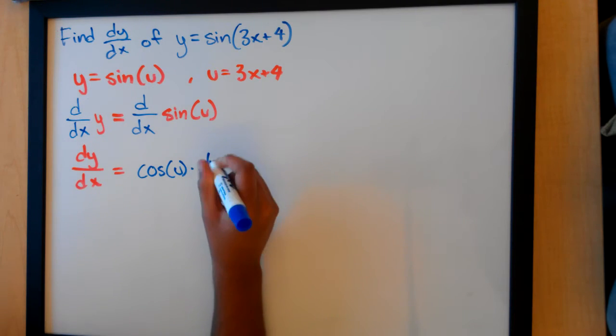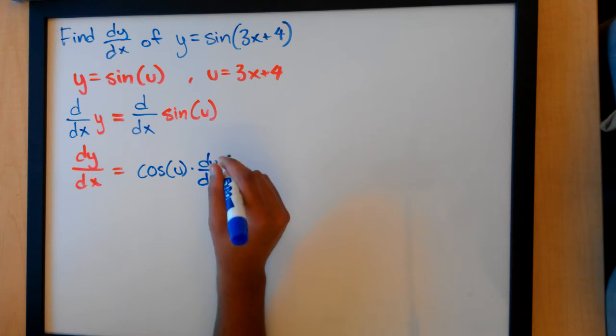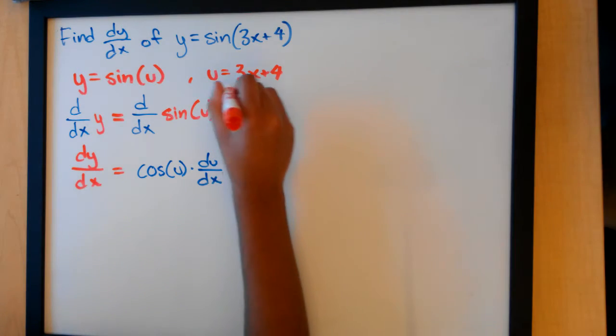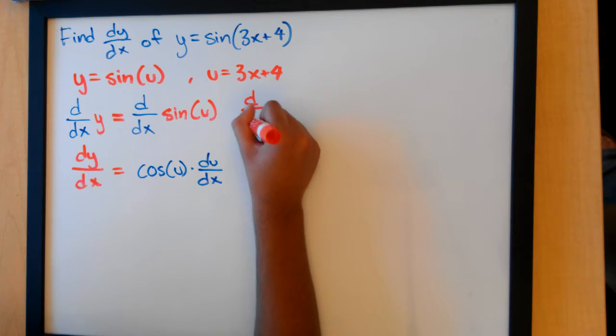Since u is a function of x, we have to multiply by du over dx. But what is du over dx? And so if we go back up here, if we take the derivative of both sides,